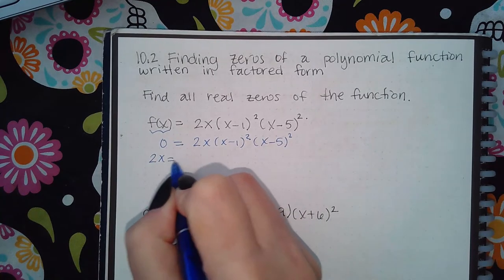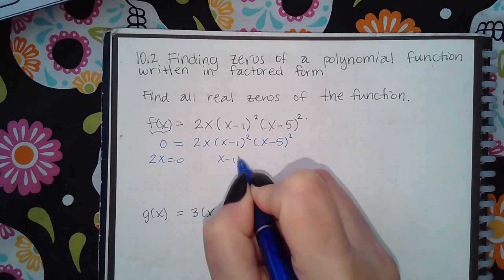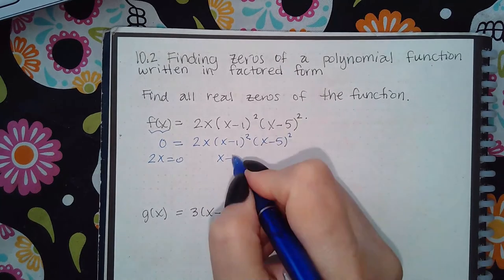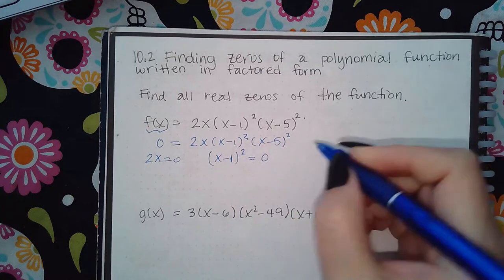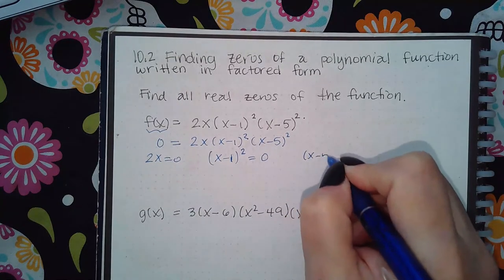I'm going to take 2x equal to zero, x minus 1... You don't need to use the squares. I'll do it once, but then for all the rest of them I'm not going to be putting the squares, and you'll see why.